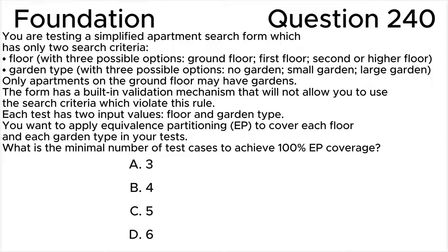Each test has two input values: floor and garden type. You want to apply equivalence partitioning (EP) to cover each floor and each garden type in new tests. What is the minimal number of test cases to achieve 100 percent EP coverage? A: three, B: four, C: five, D: six.